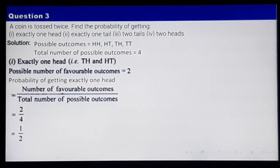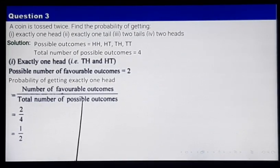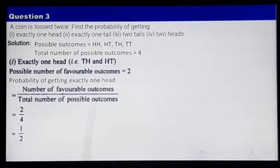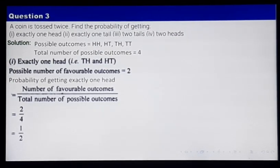The number of favorable outcomes here is 2, and total number of possible outcomes is 4. So the answer is 2 by 4, which is nothing but 1 by 2. This is question number 1.